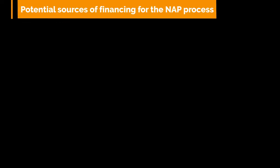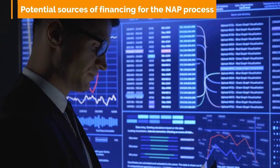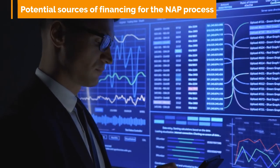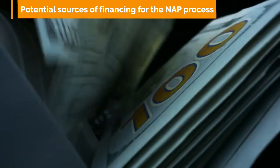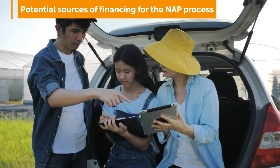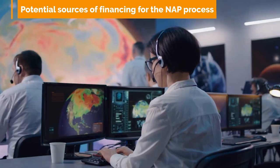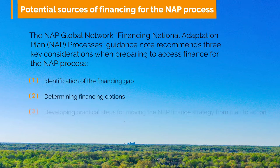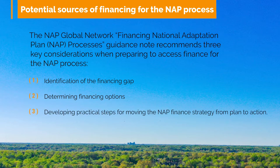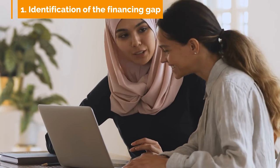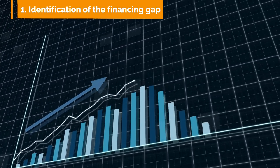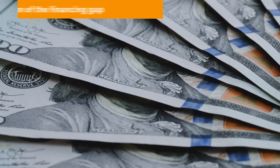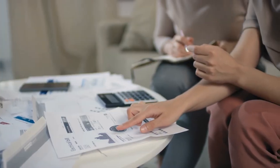Potential sources of financing for the NAP process. Financing is required throughout the NAP process, from its inception to the execution, monitoring, and assessment of prioritized adaptation measures. The amount of money required by each country will differ based on its unique situation, but it is expected to be substantial, especially at the implementation phase. The NAP Global Network financing guidance note recommends three key considerations when preparing to access finance. First, identification of the financing gap, which should take place during the planning and formulation phases to determine the amount of finance required to cover future operating and investment costs, covering all costs from development to implementation phases, as well as monitoring and evaluation.